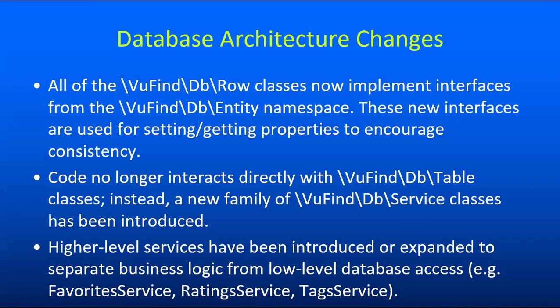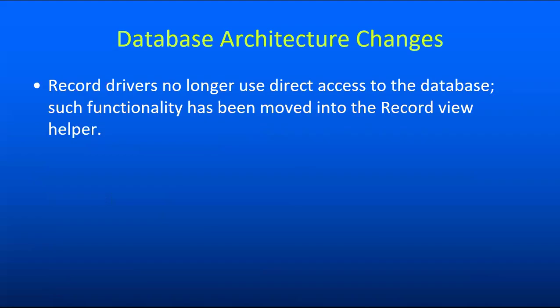This makes future migrations a lot easier because the high-level logic all just uses the service classes to do a database interaction, and then the service classes encapsulate the actual database interactions. So if in the future we need to change abstraction layers again, it is only the service classes that need to be rewritten — everything higher-level can just stay as it is. Changes made along with this include removing database access from record drivers, which in past releases did too many things, mixing record abstraction with reads and writes to the database.